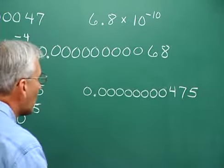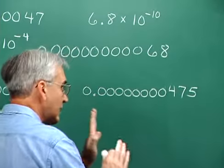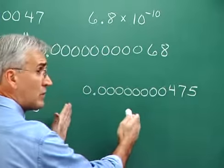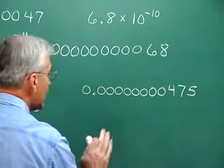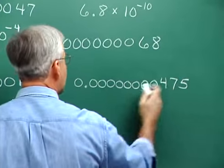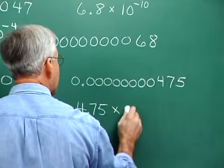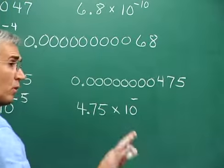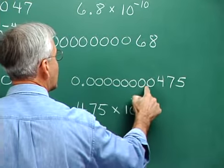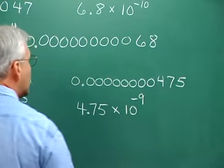Let's go back the other way one more time. We see a really small number — 0.000000475 — so we know we're going to have a negative exponent on ten. We move this decimal point to the position between 4 and 7, giving us 4.75 times ten to some negative exponent. Counting from there: one, two, three, four, five, six, seven, eight, nine. So it's 4.75 times ten to the negative nine.